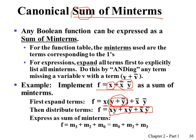Now in the two-variable function f, each term is a minterm because all variables are present. xy corresponds to minterm three, xy-naught is minterm two, and NOT x NOT y is minterm zero. So function f in sum of minterms form is expressed using those indices.